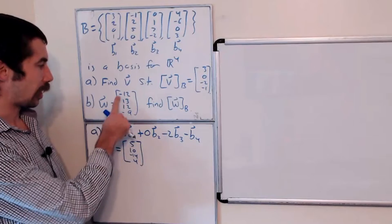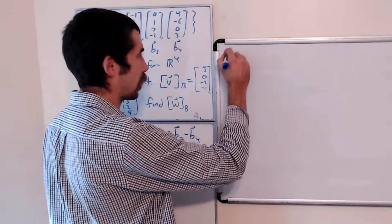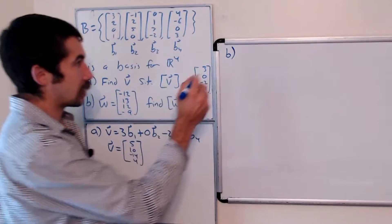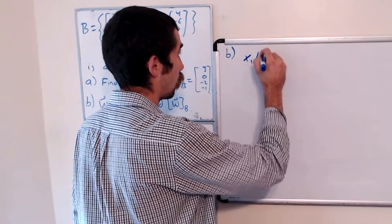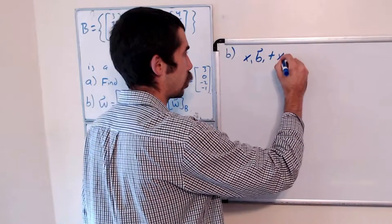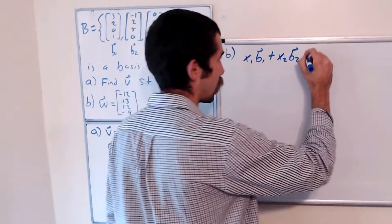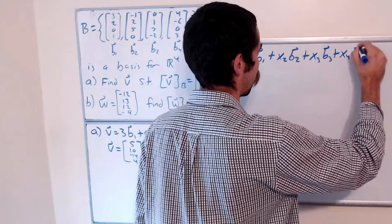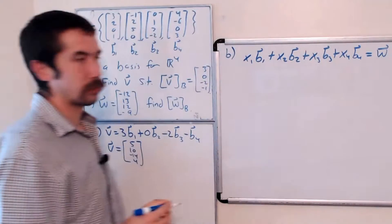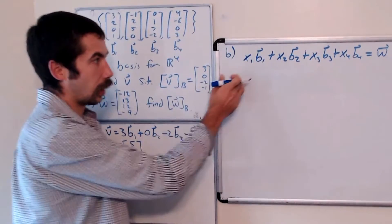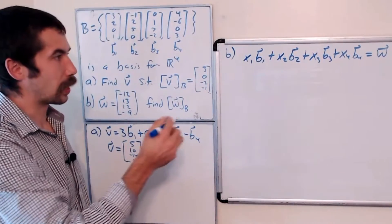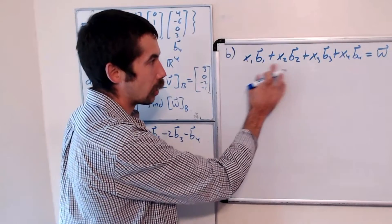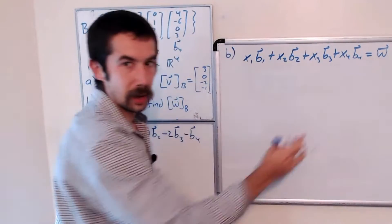We know that W is this vector, and we want to find the B coordinates for W. What that's saying is that some number X1 times our first basis vector plus X2 times our second basis vector plus X3 times our third basis vector plus X4 times our fourth basis vector equals W. We want to solve this vector equation, and we can do that by writing out an augmented matrix where the first four columns are the basis vectors and the rightmost column is W, and then we'll row reduce.